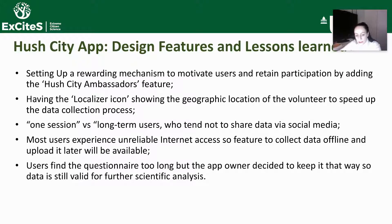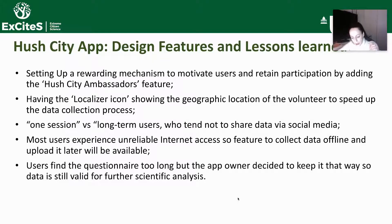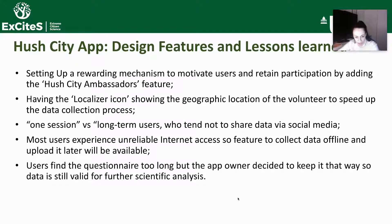Some of the design issues the developers found include, first of all, setting up rewarding mechanisms to motivate users and retain participation. To do that, they added the Hashtag ambassador feature, which is updated monthly. Additional homepage features include the localizer icon, which indicates the exact user's location on the map while using the app, so that by clicking on it users can refresh and double-check their geographic position before starting to map and collect data. This also speeded up the process quite significantly.